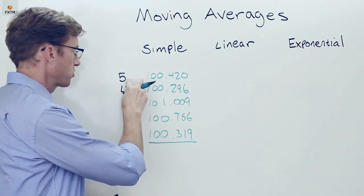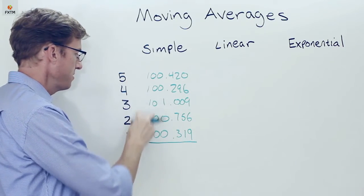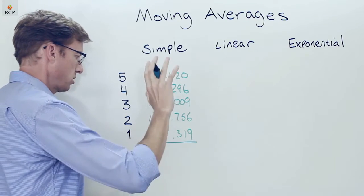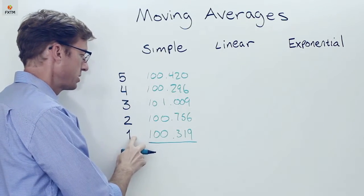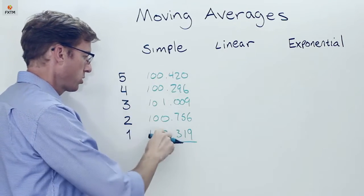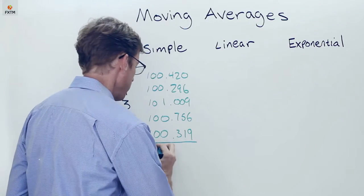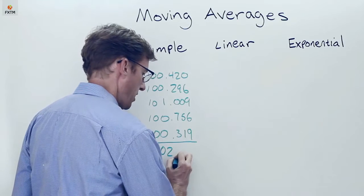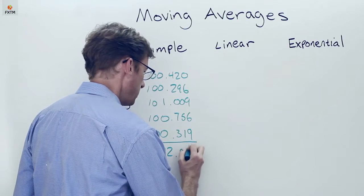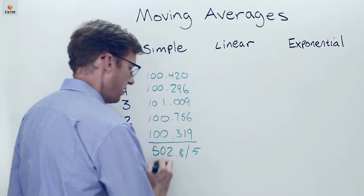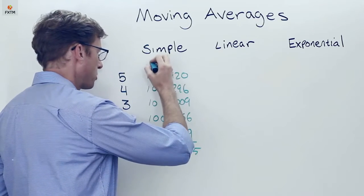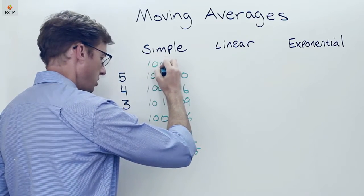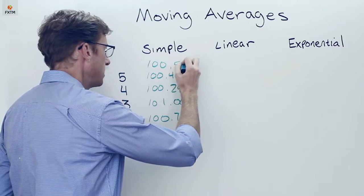Then all we're doing is we're taking the most recent period, which I've labeled day five, and the furthest historical period, which I've labeled day one. We're just going to total those up and then divide those by five. So if we were to do that, then the total value here, which would be 502.8, divide that by five, that's going to give me a value for the simple moving average of 100.56.